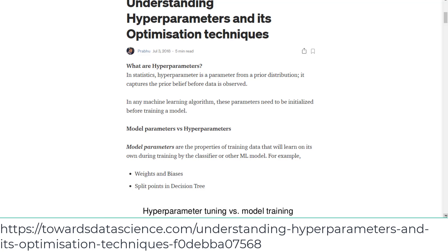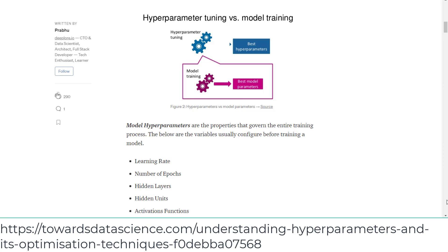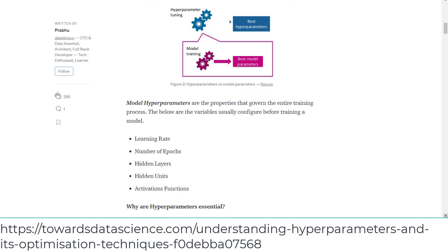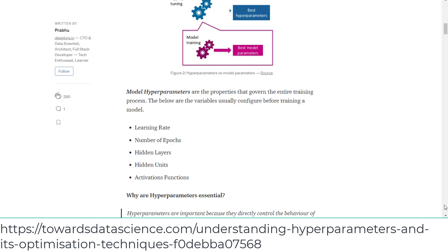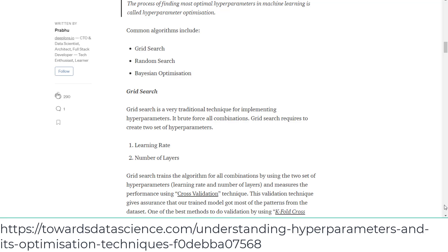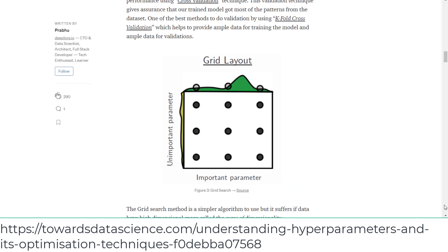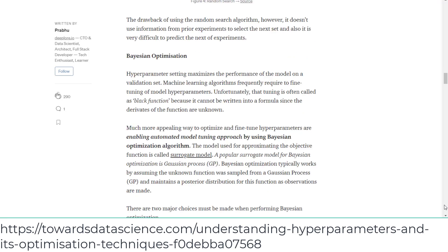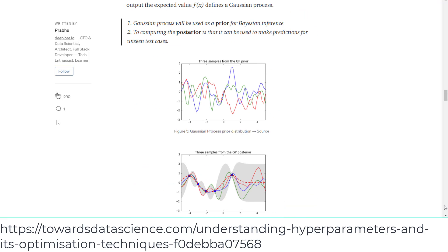I found this 'Understanding Hyperparameters and Optimization Techniques' article to be a good supplement to the crash course. It explains hyperparameter tuning vs. model training very well, and I found it helpful for understanding optimization in the test. You may want to read it if you have time.